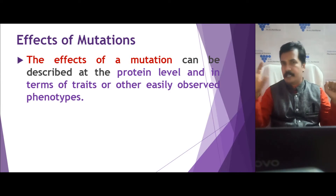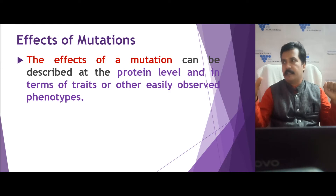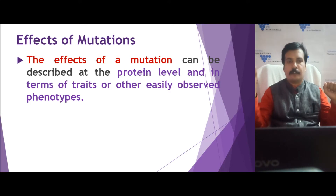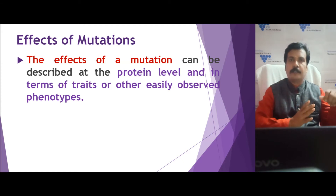The second type is the exon sequence, which is the protein-coding sequence. If a change occurs in this coding region — that is, the nucleotide sequence is altered — the protein sequence will also be altered.